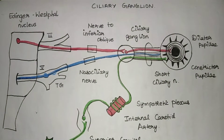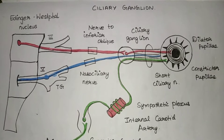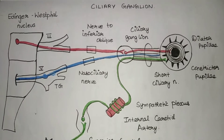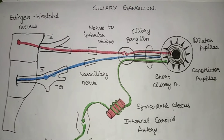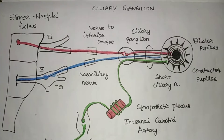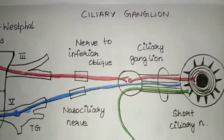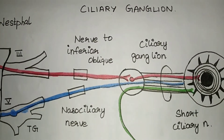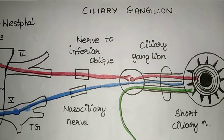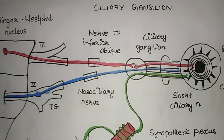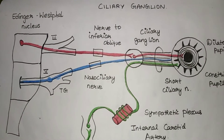Welcome to MBBS Tamil. Now we will talk about ciliary ganglion. Ciliary ganglion is one of the most important ganglia in the head and neck. It is a parasympathetic ganglion. In this video we will talk about the ciliary ganglion location and its course.